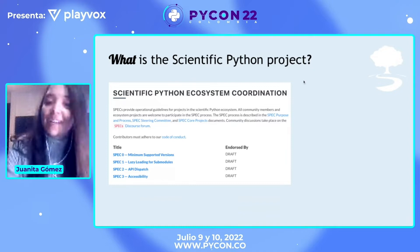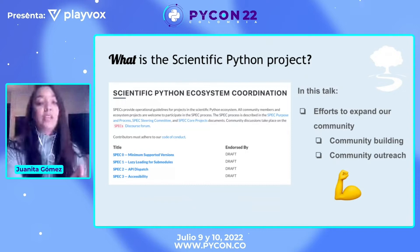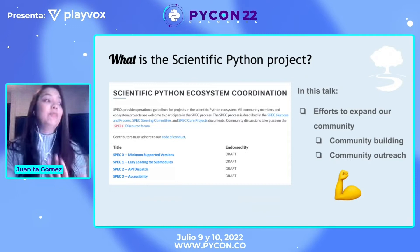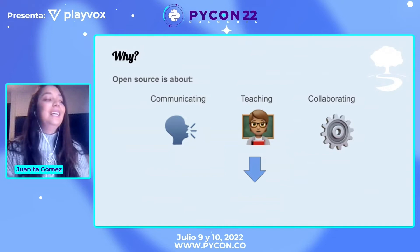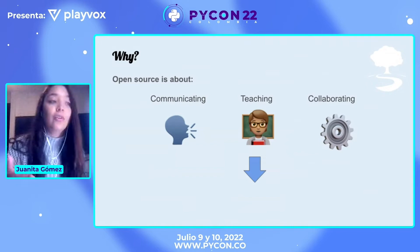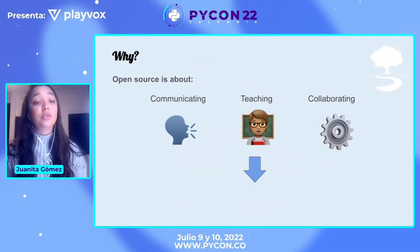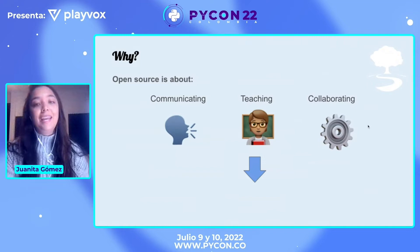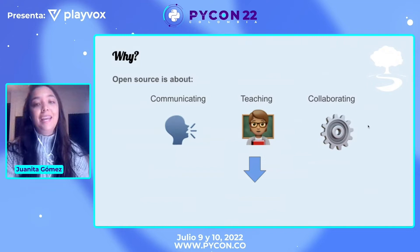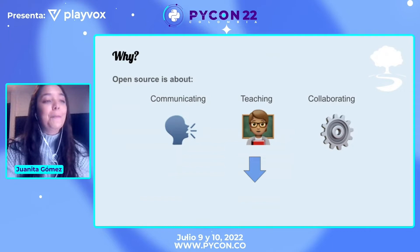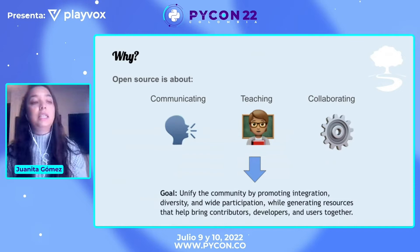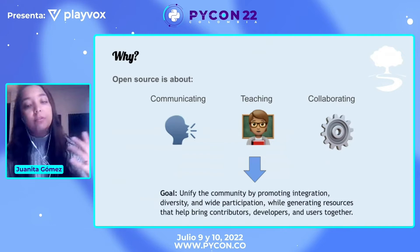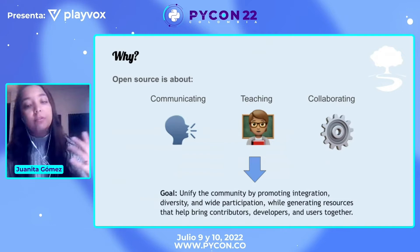However, this talk is focused on the efforts we've been doing to expand our community regarding community building and outreach, which is what I have been doing as a community manager. As developers, sometimes we are too focused on writing code and too little on community. I like to think that open source is about more than coding — it's about communicating, teaching, and collaborating in order to build epic things together. The goal of the Scientific Python project is to unify the community: to promote integration, diversity, and participation from a very broad community, while generating resources that help contributors, developers and users come together.